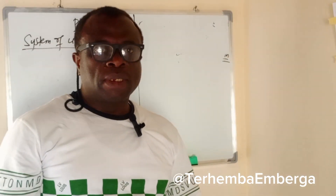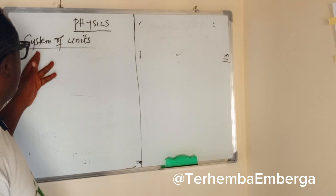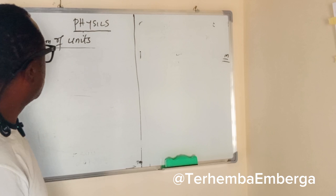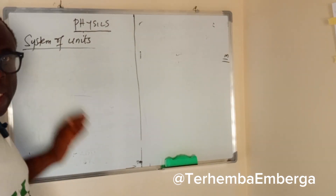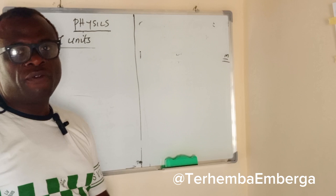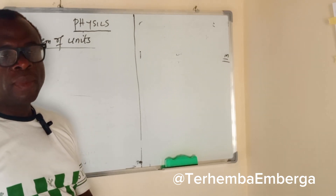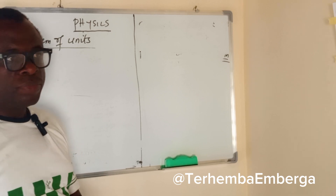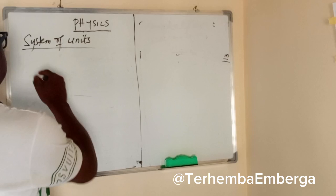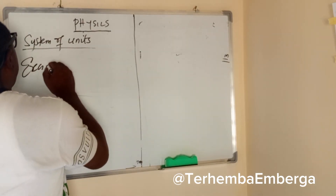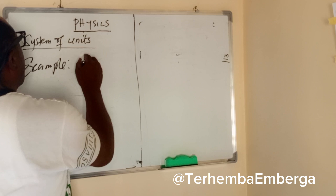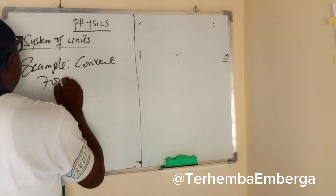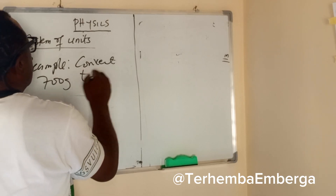Greetings viewers. This time we are still looking at systems of units. I want to consider mass, which is also a fundamental quantity, and its unit is the kilogram. So let's look at an example: convert 700 grams to kg.